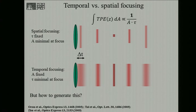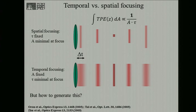For spatial focusing, the pulse duration — typically 100 femtoseconds — is fixed, and the area is minimal at the focus. The integrated two-photon excitation signal is inversely proportional to the area and inversely proportional to the pulse duration. So for spatial focusing, you photo-excite by two-photon where the area is smallest. If instead you could modulate the pulse duration as a function of propagation into the sample — such that the pulse is long as it enters, becomes shorter and shorter, reaches its shortest at the focal plane, then becomes longer again — this would also confine two-photon excitation to a single plane, and this confinement has nothing to do with the excitation area.